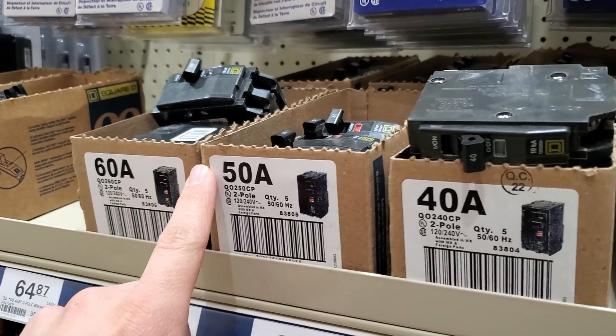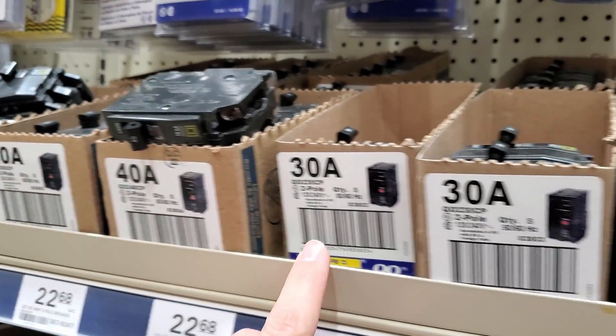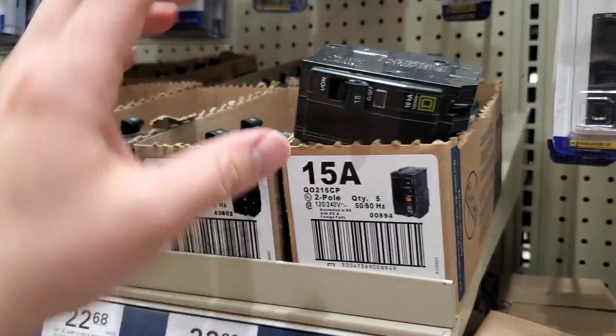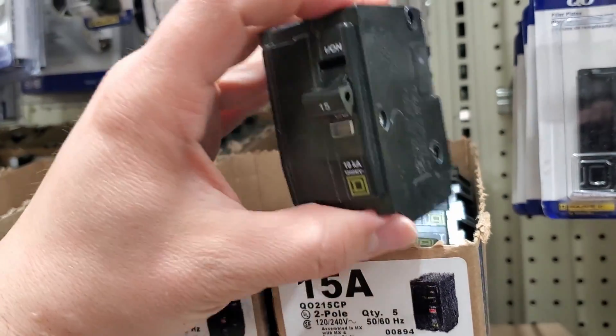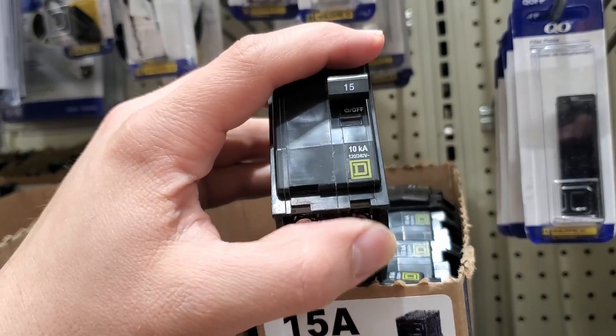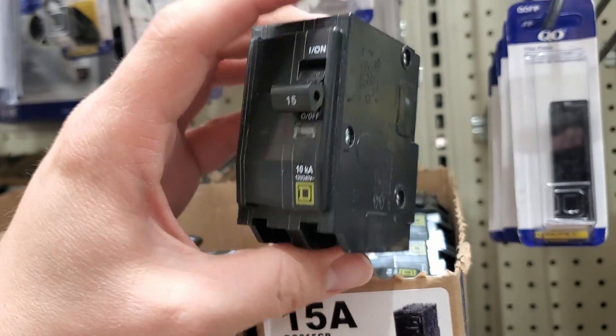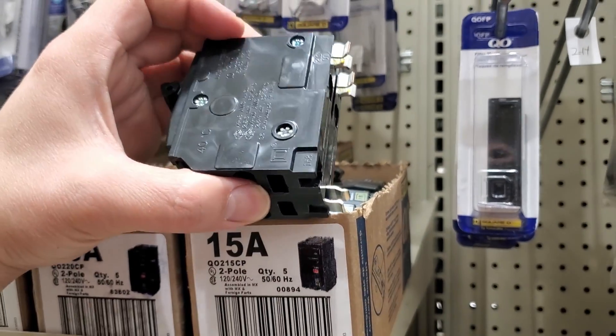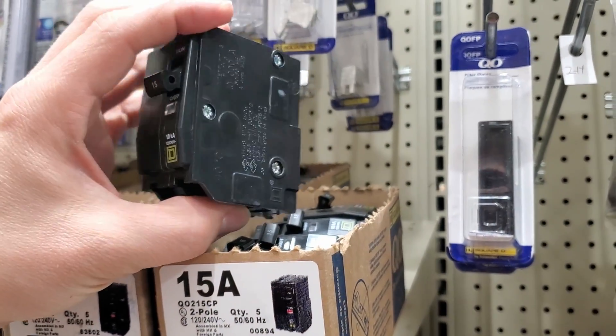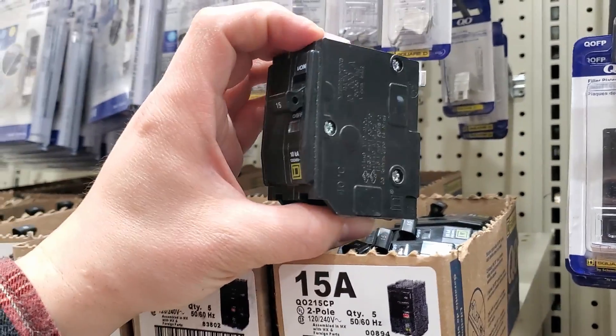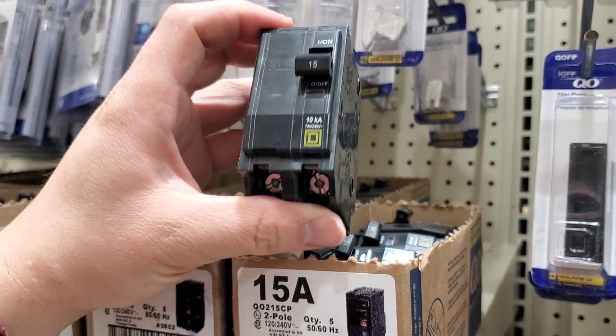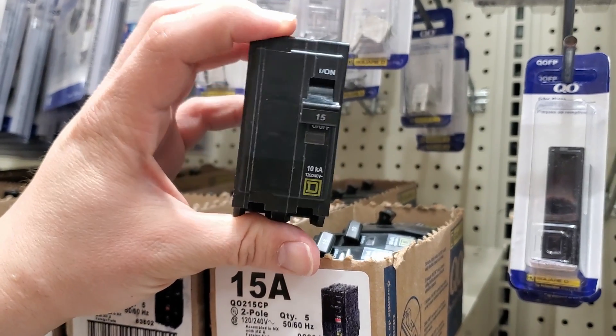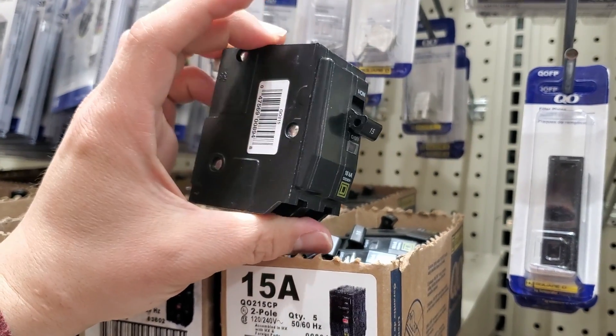When you're choosing your double pole breaker to feed the sense energy monitor, you want to choose the smallest available size. In this case it's going to be 15 amp, typically the smallest double pole breaker you'll be able to get. The sense energy monitor uses a ridiculously small amount of power, so it wouldn't even need anywhere near 15 amps. And the device itself is certified to be connected to any size double pole breaker, but it just makes sense to use the smallest available breaker.